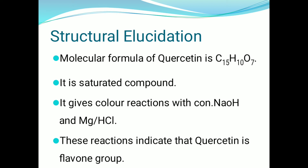The molecular formula of quercetin is C15H10O7. Quercetin is a saturated compound. It does not give a positive test with Baeyer's reagent — that means KMnO4 solution — and does not decolorize bromine water. So it is taken as a saturated compound.